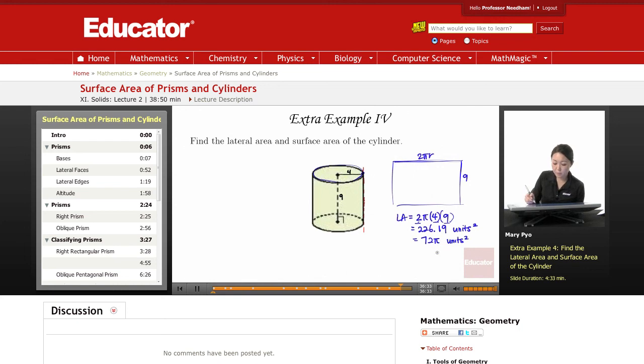But otherwise if you have to solve it out, you can use your calculator. 72 times pi which is 3.14. So this would be the answer for the lateral area.